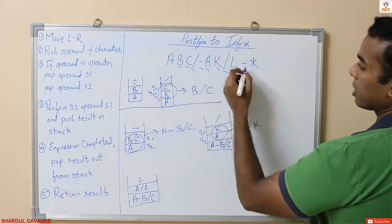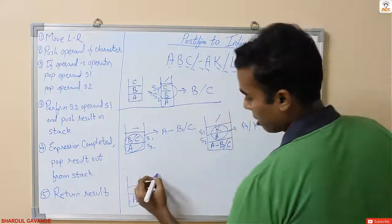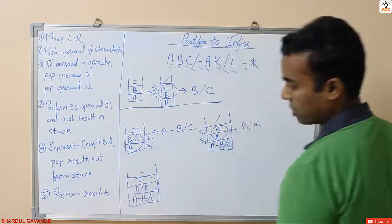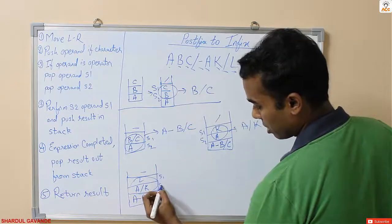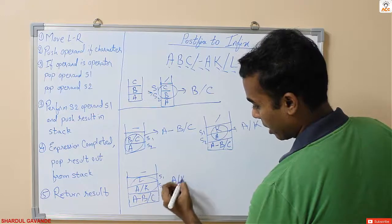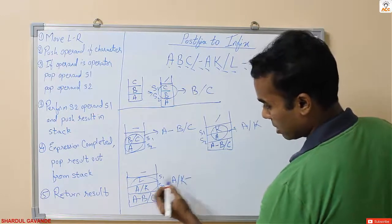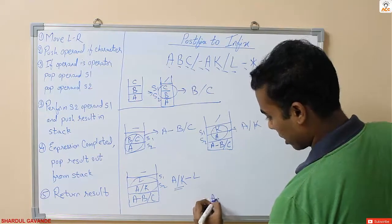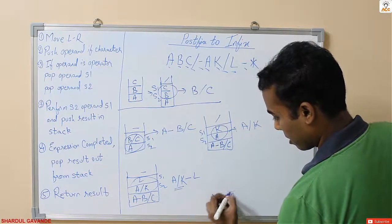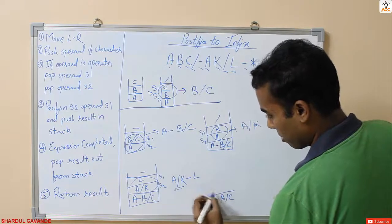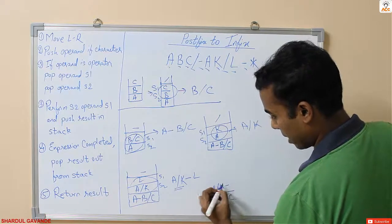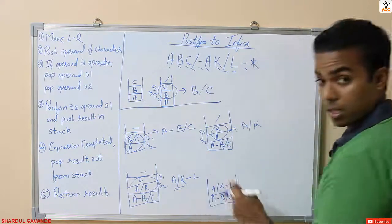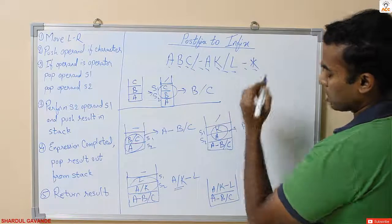The stack now contains 'a minus b divided by c' and 'a divided by k'. Then I have 'l' — it is a character so I push it into the stack. Then I have a minus operator. Since it is an operator, I pop s1 and s2. s2 is 'a/k' and s1 is 'l'. I compute 'a divided by k minus l' and push this result back into the stack.